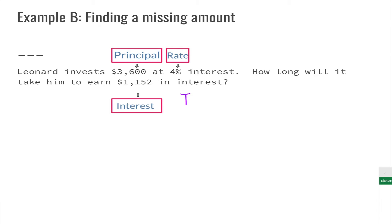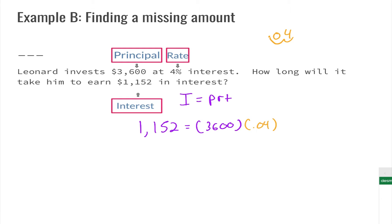Writing out our formula I equals P times R times T, we can substitute in: interest is one thousand one hundred and fifty-two dollars, principal is thirty-six hundred dollars, and rate is four percent which we convert to a decimal by moving the decimal two places to the left, giving us 0.04. We don't know our time T, so we leave that as the variable T. To solve this we'll need to use our equation-solving skills.